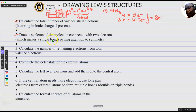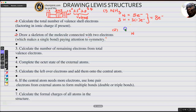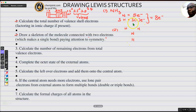Step number 2, you want to draw the skeleton of the molecule connected with 2 electrons, paying attention to symmetry. The only way I would pay attention to symmetry is to put nitrogen in the center of the structure. By the way, hydrogens and halogens — halogens meaning fluorine, chlorine, bromine — they are usually outside the molecule. That is giving me some symmetry because I can cut this way and reflect these two hydrogens across the cutting plane.